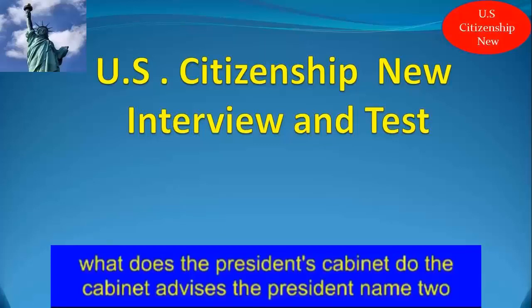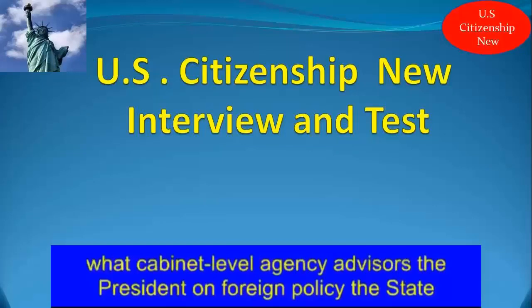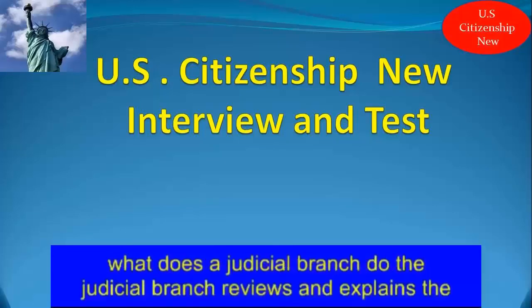Name two Cabinet-level positions. The Secretary of Agriculture and the Secretary of Defense. What Cabinet-level agency advises the President on foreign policy? The State Department advises the President. What does the Judicial Branch do? The Judicial Branch reviews and explains the laws.